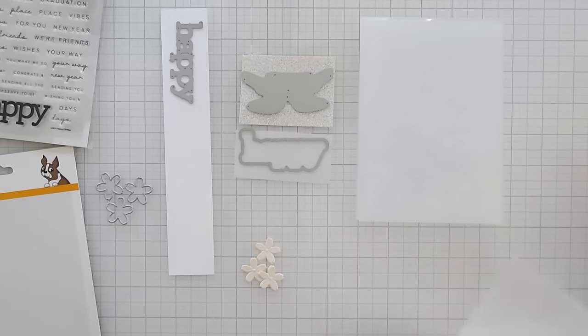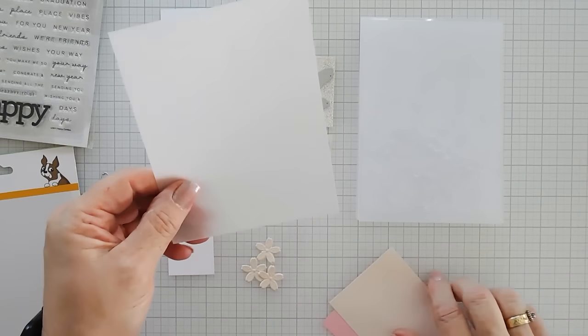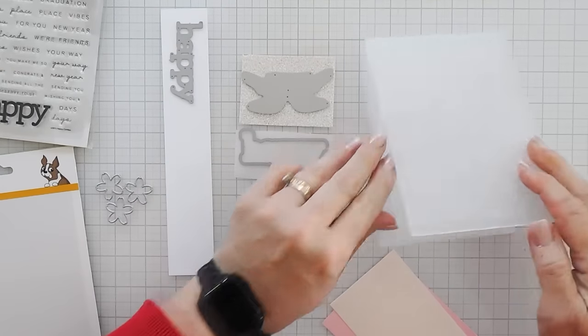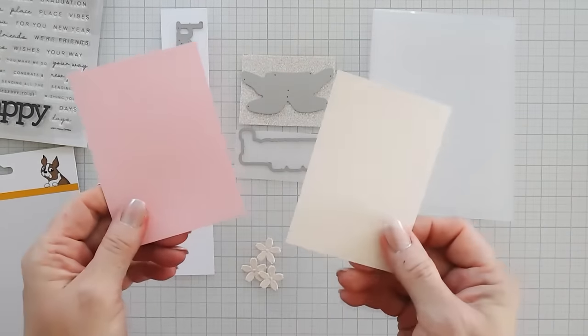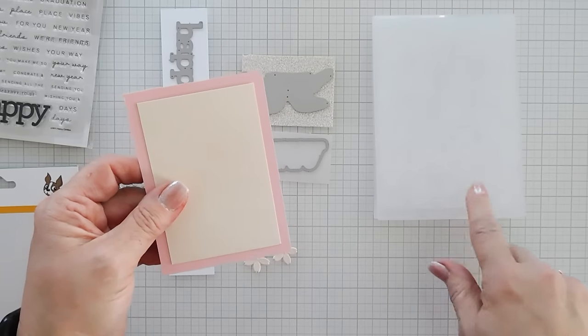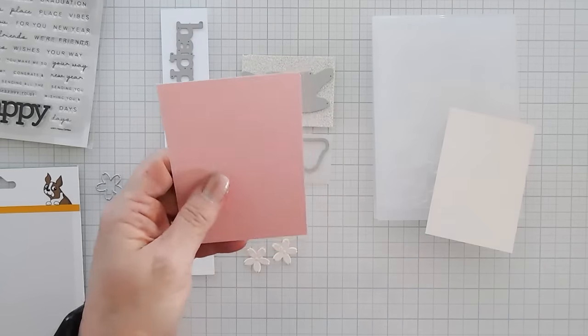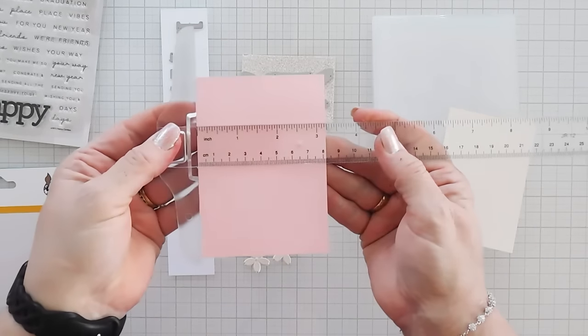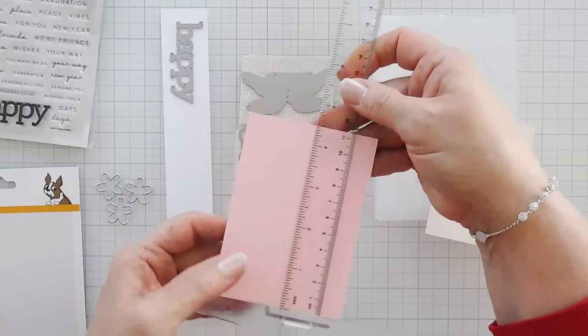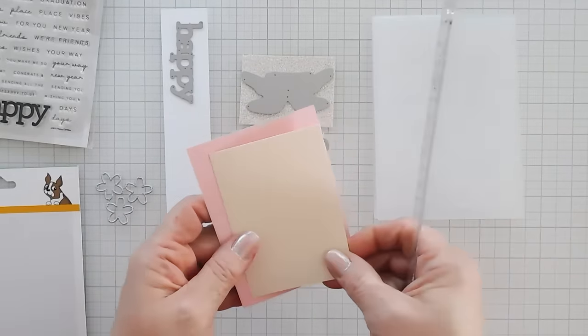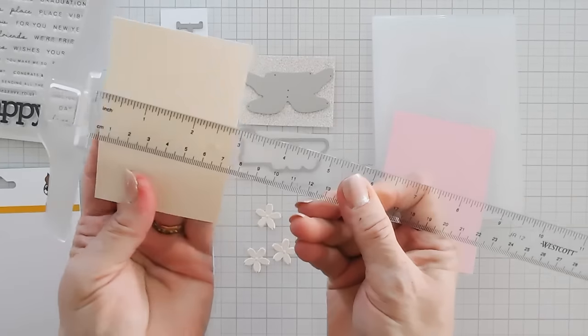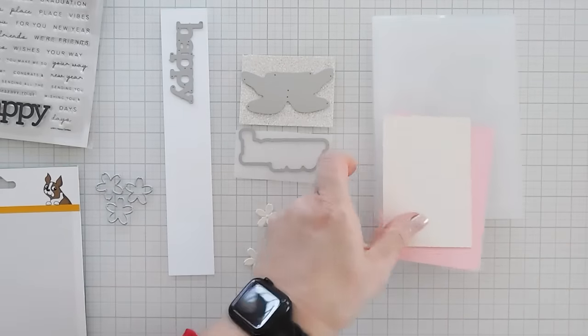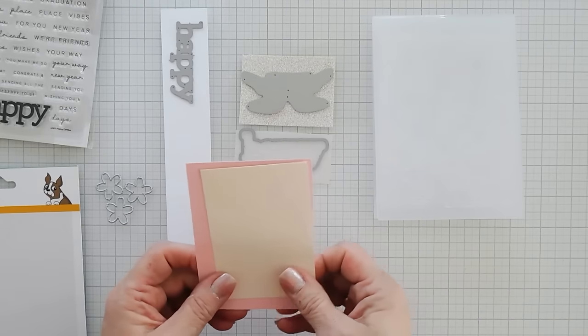Now I'm going to emboss an A2 panel of vellum. This is Hero Arts vellum, so it's very thick. I'm going to emboss this and then I'm also going to emboss these two panels. The vellum emboss is going to give it a real airy look. But let me show you the sizes of these. This is, I believe, three and a quarter inches wide by four and a half inches tall. And then this is a half inch smaller. So this is two and three quarter inches wide by four inches tall. Wait until you see these embossed. It's so pretty.